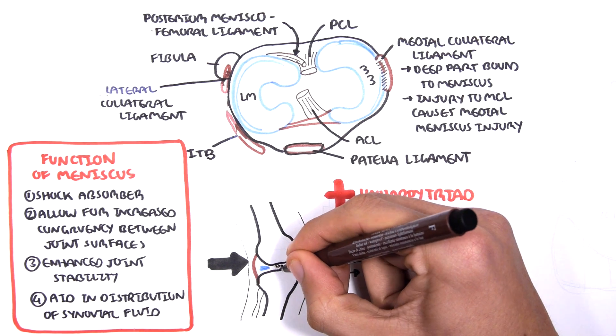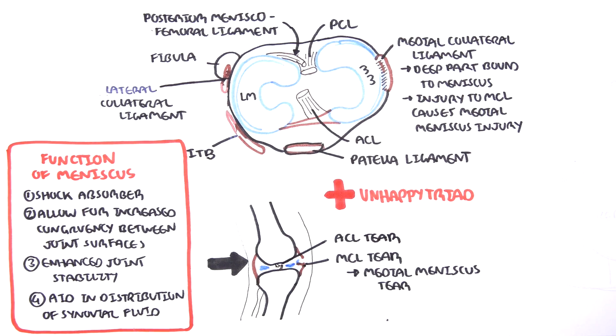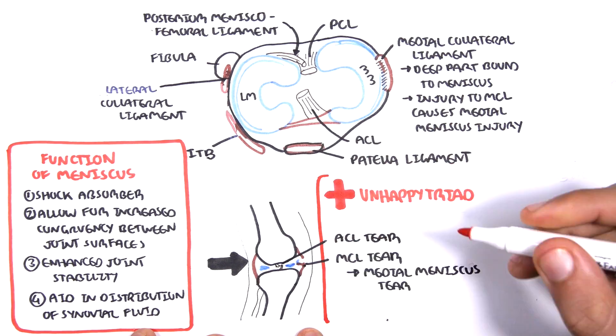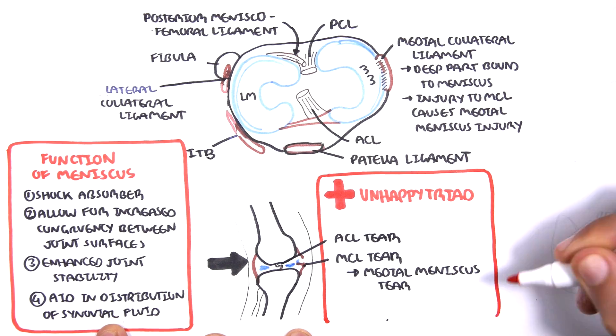The unhappy triad consists of a medial collateral ligament tear which will then tear the medial meniscus and will also result in an anterior cruciate ligament tear. This is an indication for surgery.